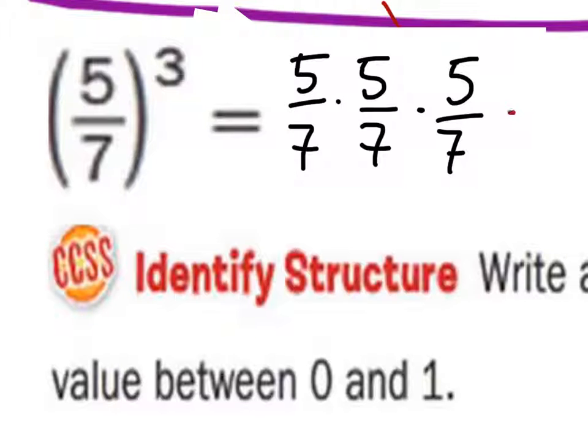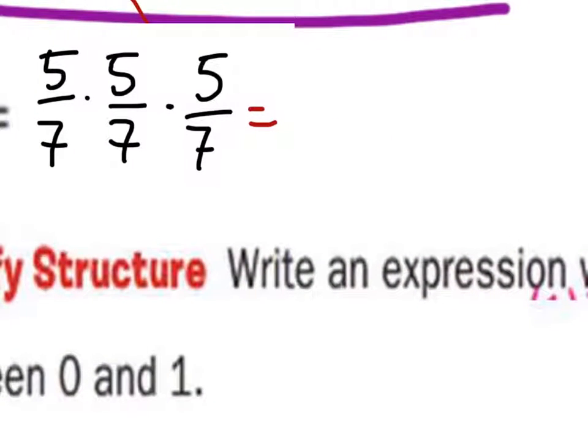Pretty simple. So as it turns out, and we can look at it like this as well, okay? So if we see this, we have five over seven, correct? How many fives do we have being multiplied together? Three. How many sevens are being multiplied together? Three. Three. So five to the power of three is one twenty-five.